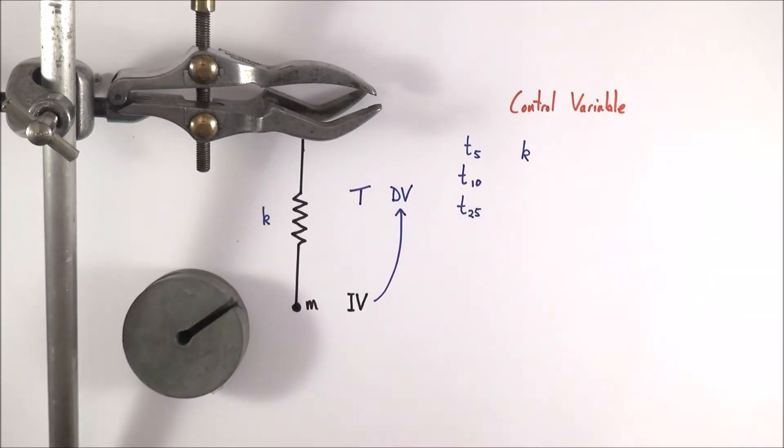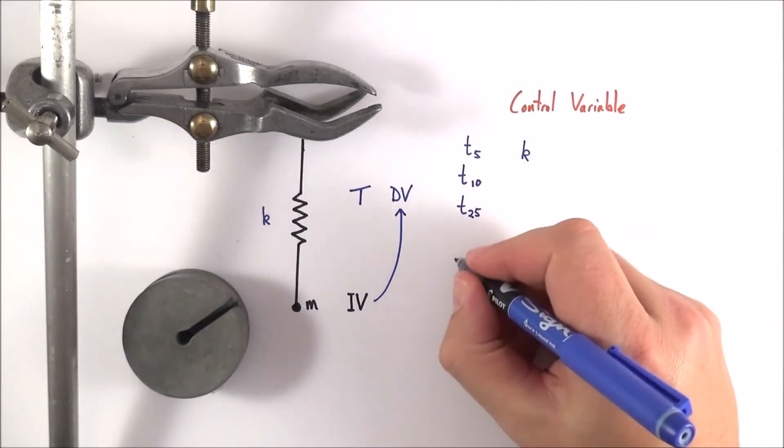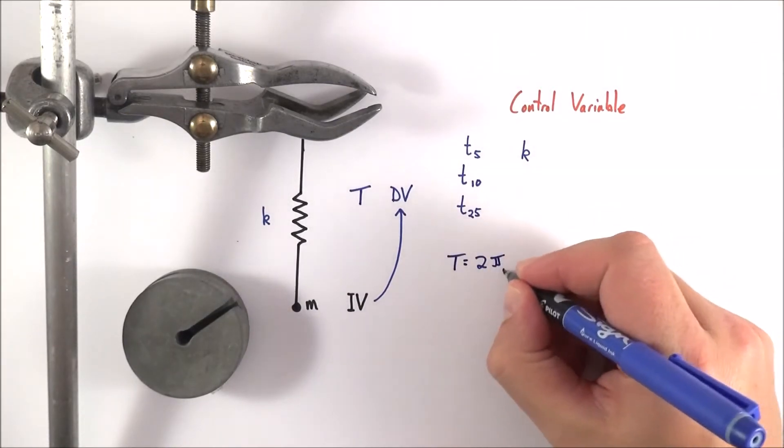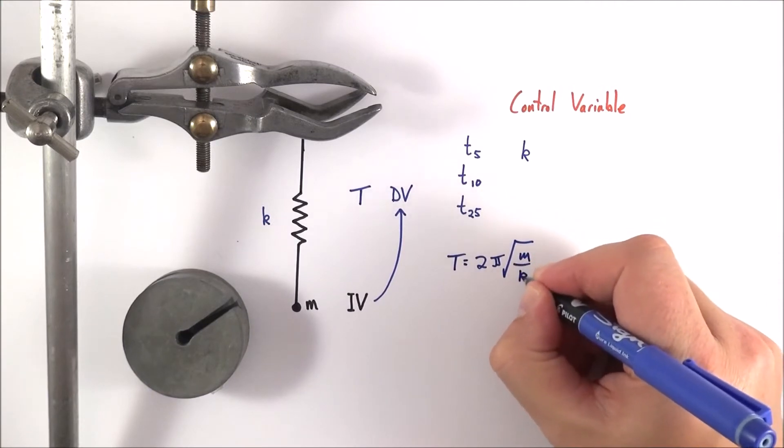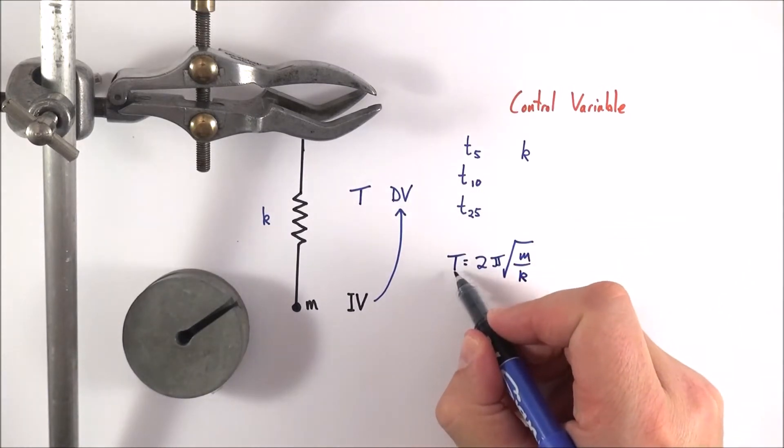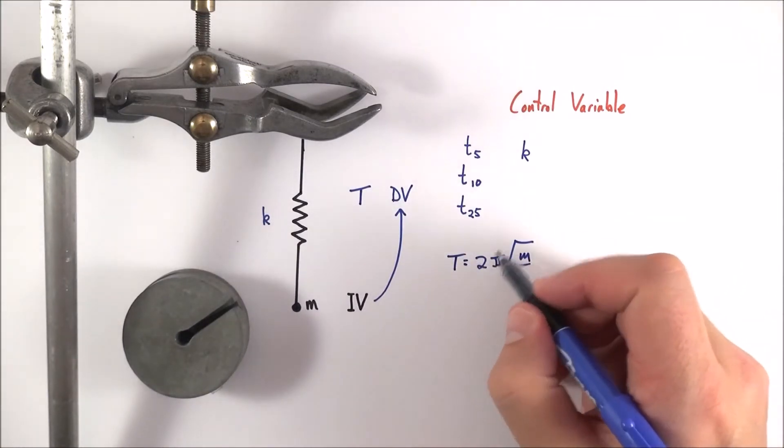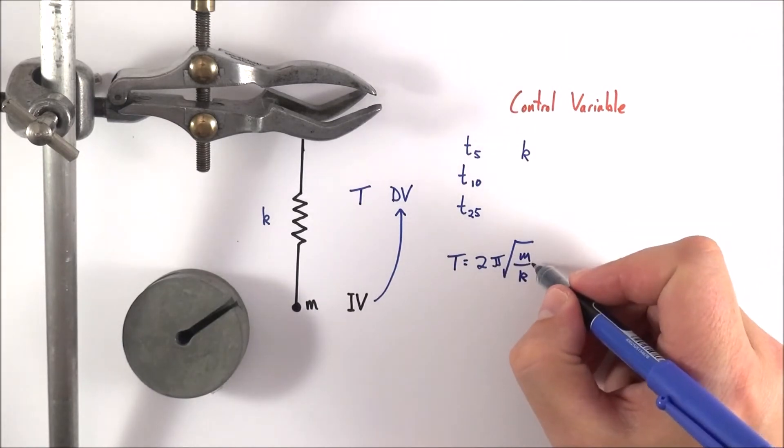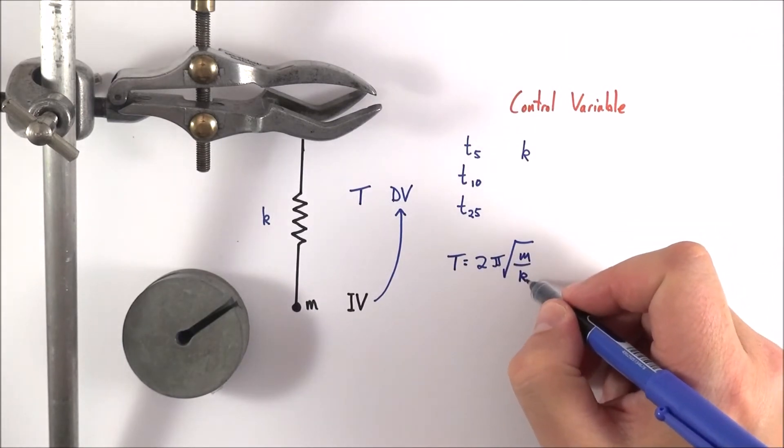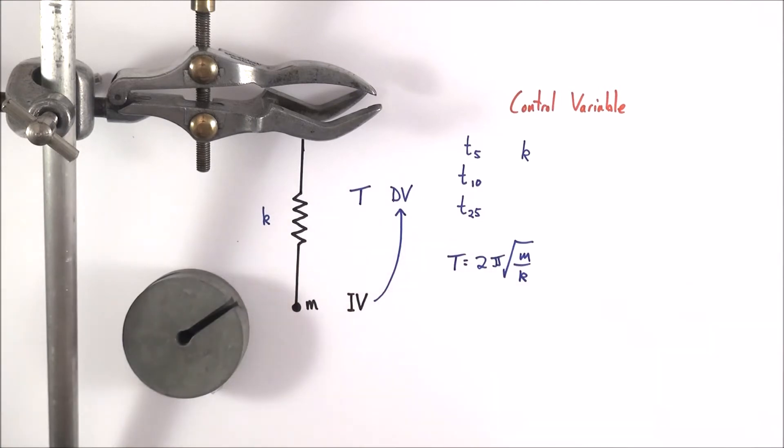Now in this experiment here there's an equation that says t is equal to 2π root m over k. Where t is the time period for one oscillation, 2π is just 2π, we've got the mass which is oscillating and also the spring constant or the stiffness of the spring.